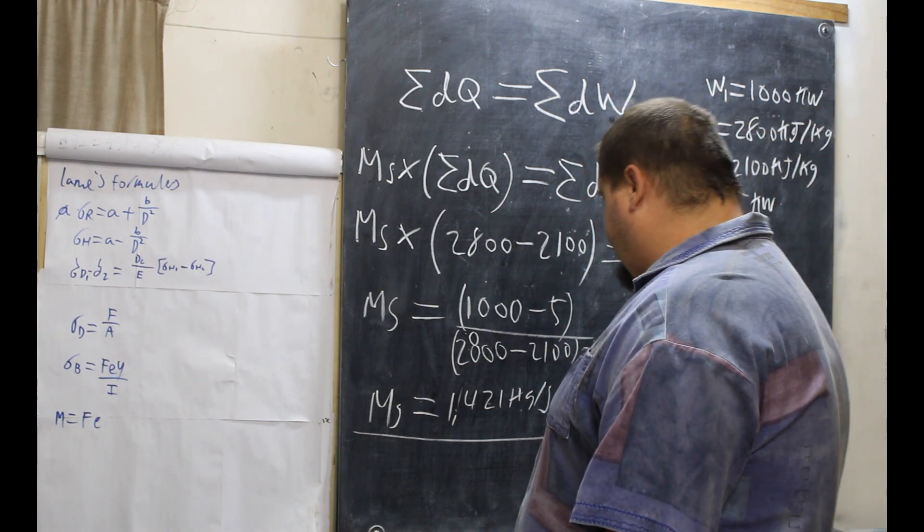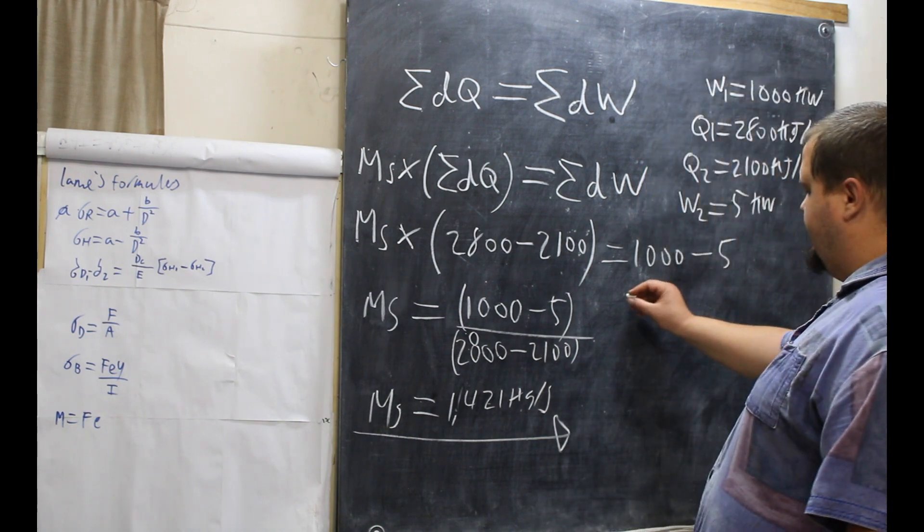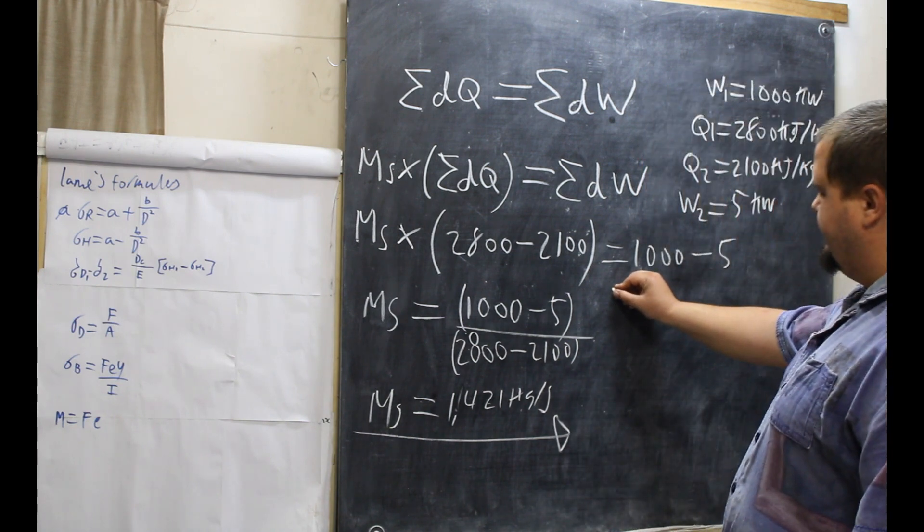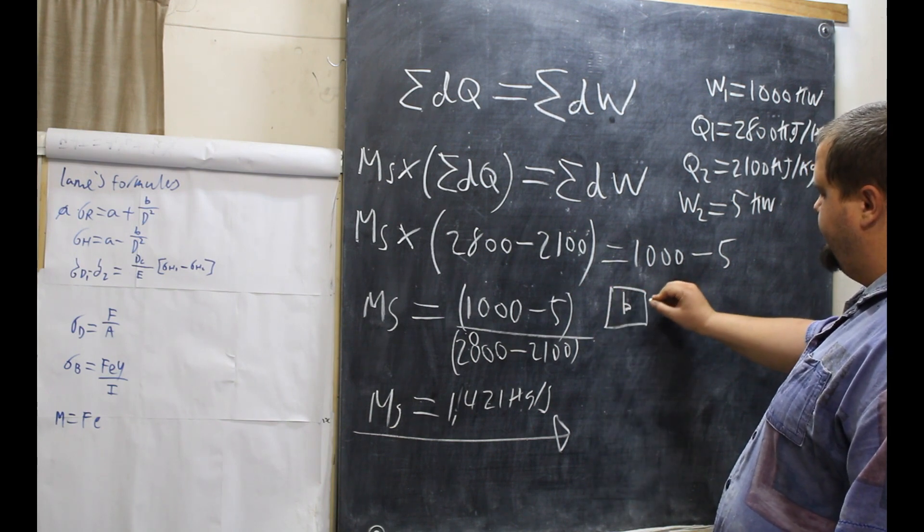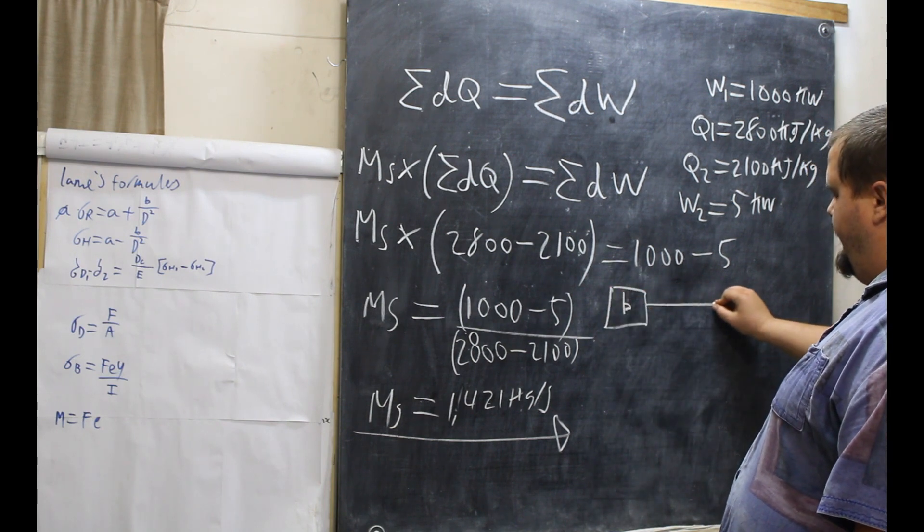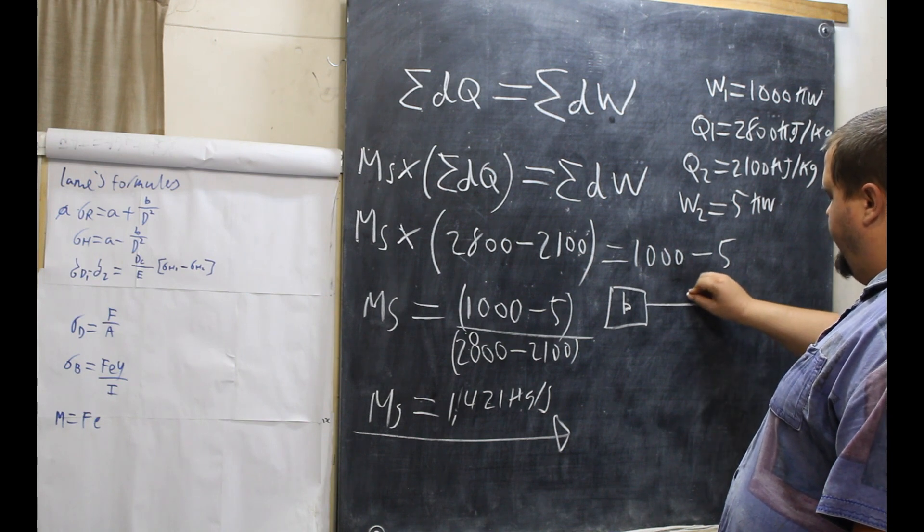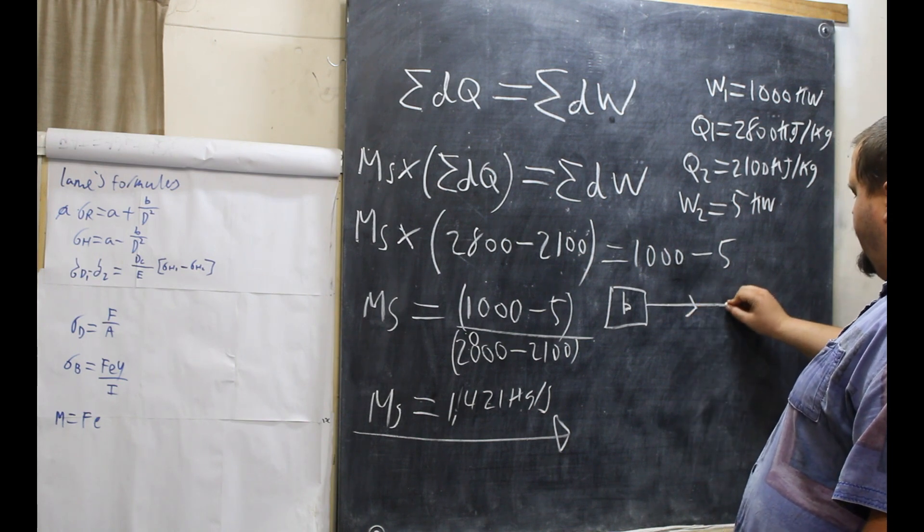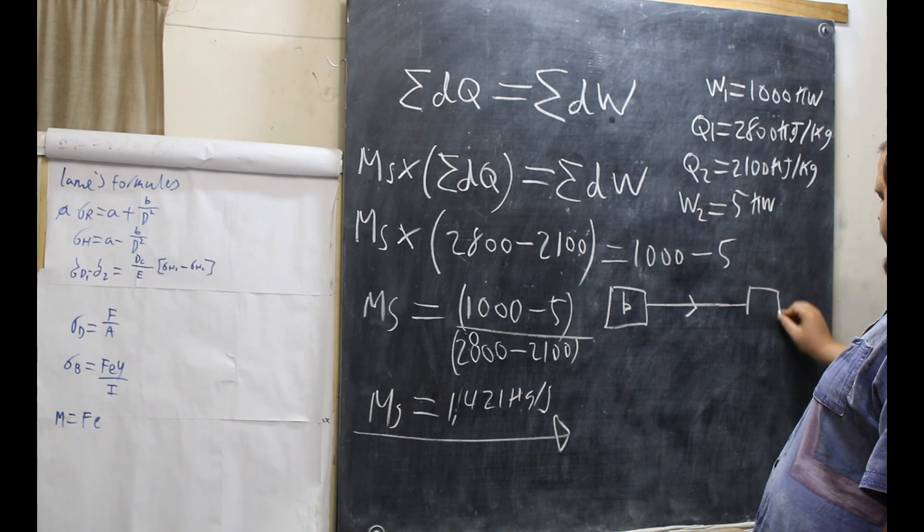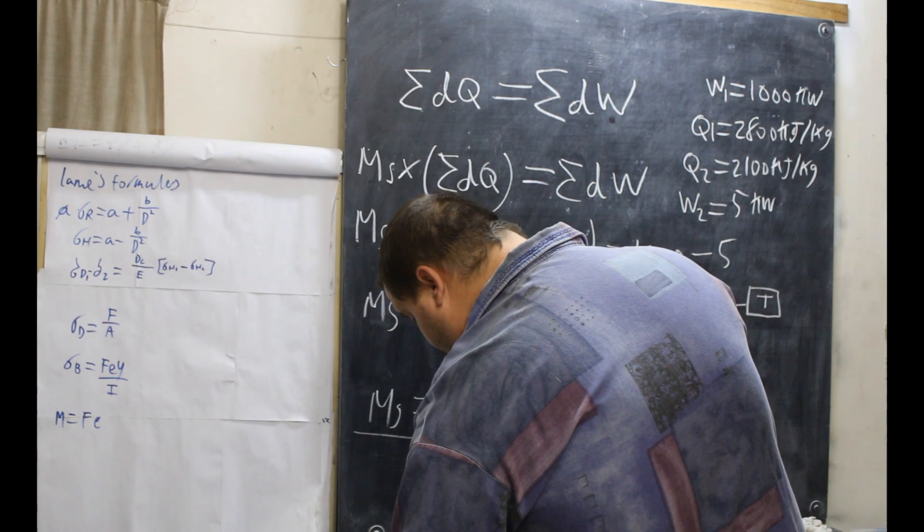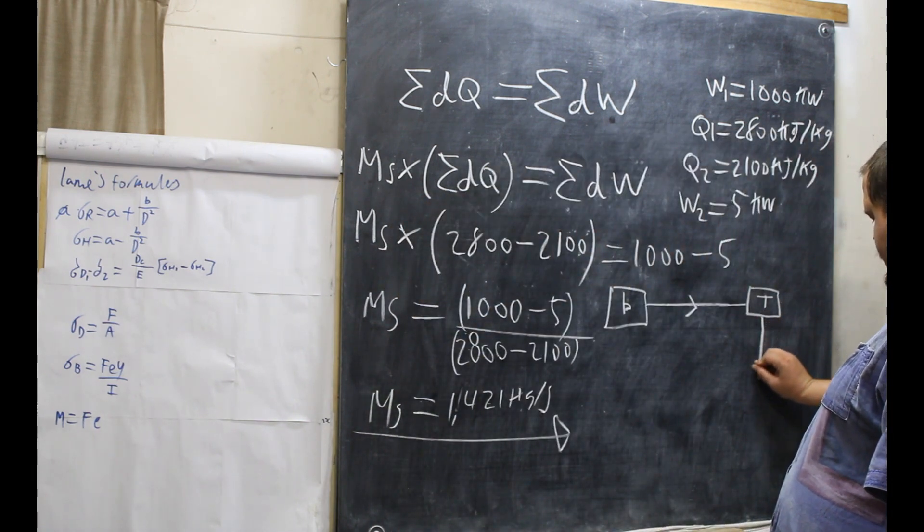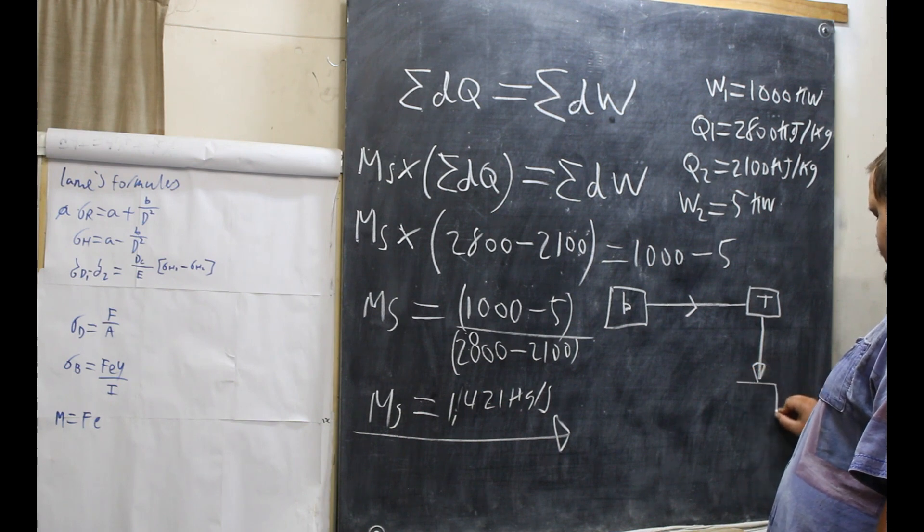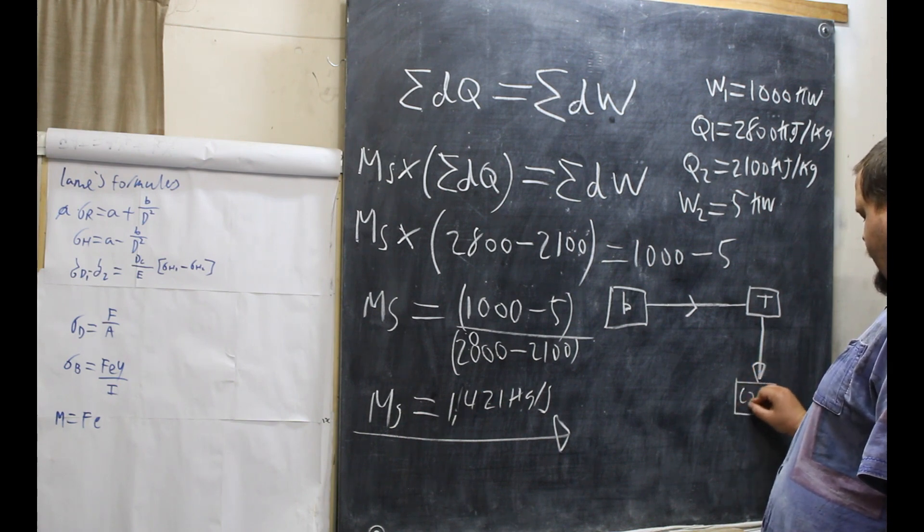And also, this is what they're talking about. This is the system they are talking about. First, we have our boiler. Then, that goes from the boiler to the turbine. That goes to the turbine. After the turbine, it comes down to a condenser.